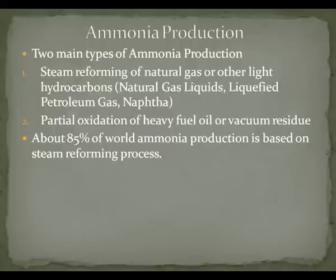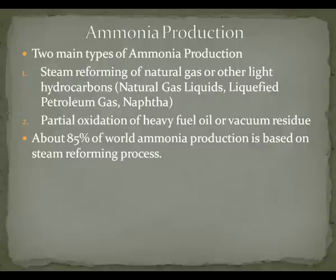There are currently two main types of ammonia production process in operation around the world. The first is the steam reforming of natural gas or other light hydrocarbons — for example, natural gas liquids or liquefied petroleum gas. The other pathway is partial oxidation of heavy fuel oil or vacuum residue. About 85% of world ammonia production is based on the steam reforming process.